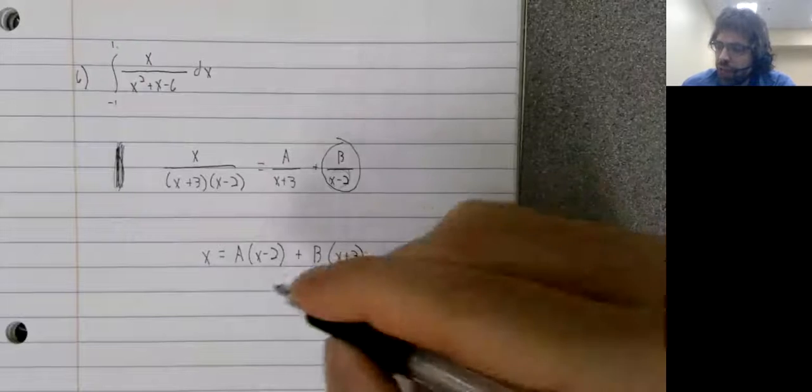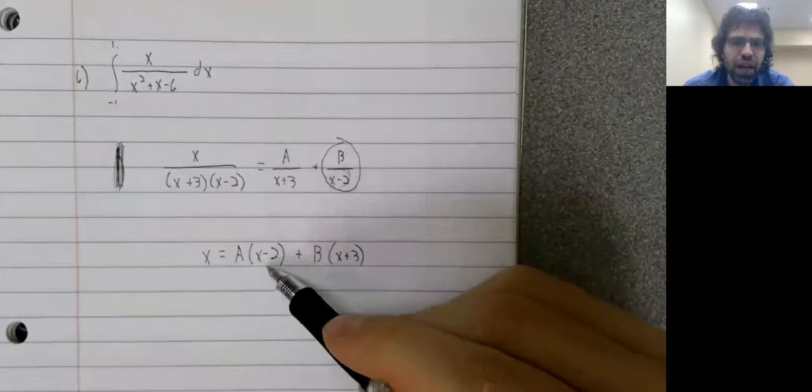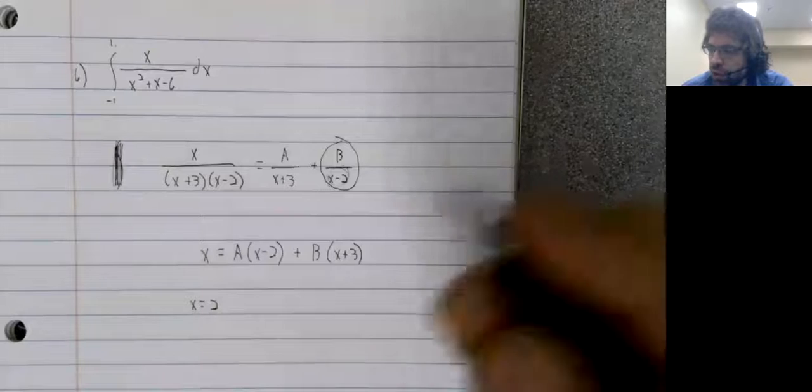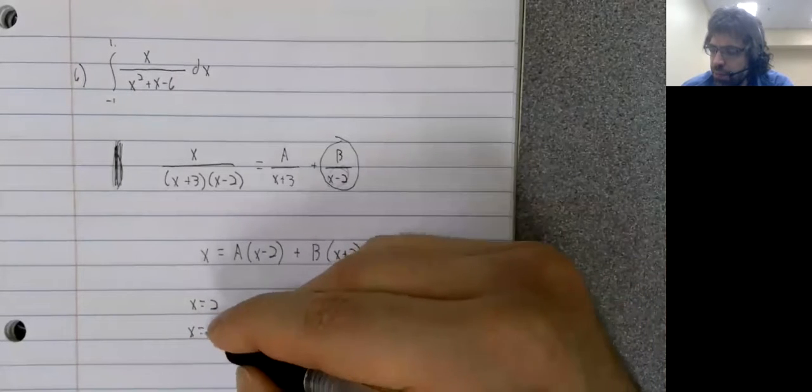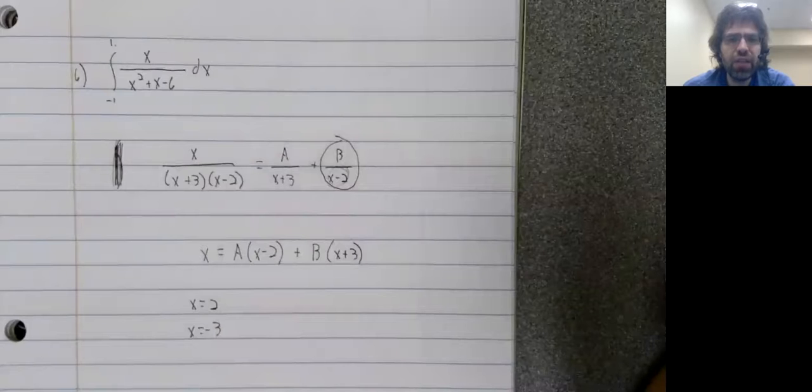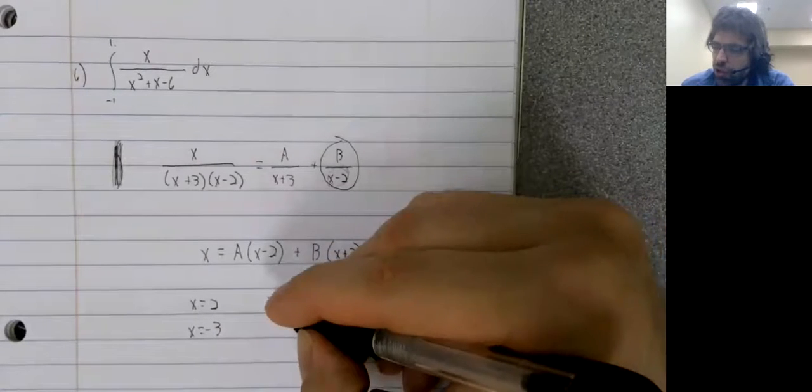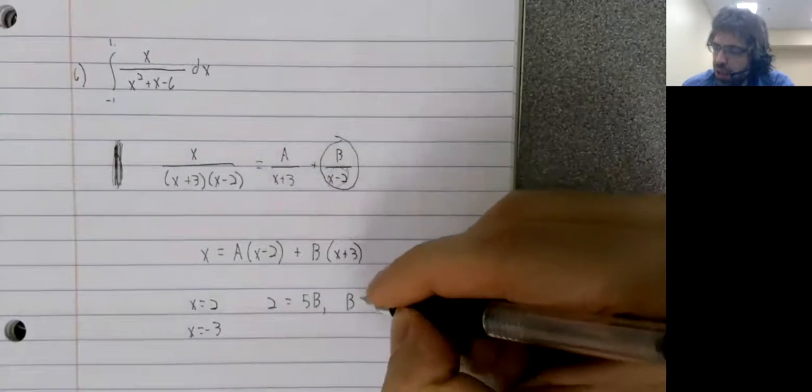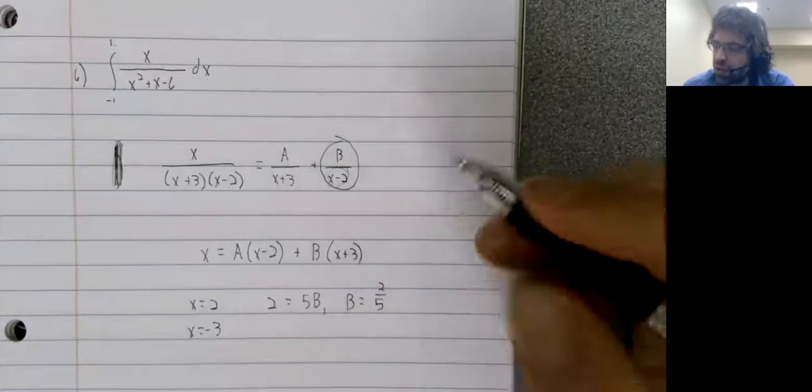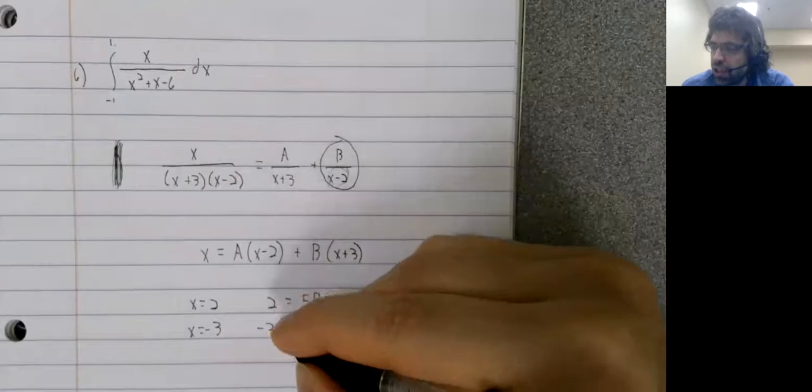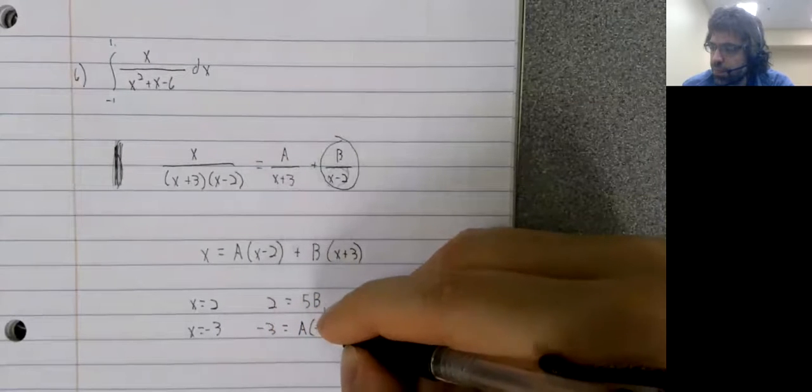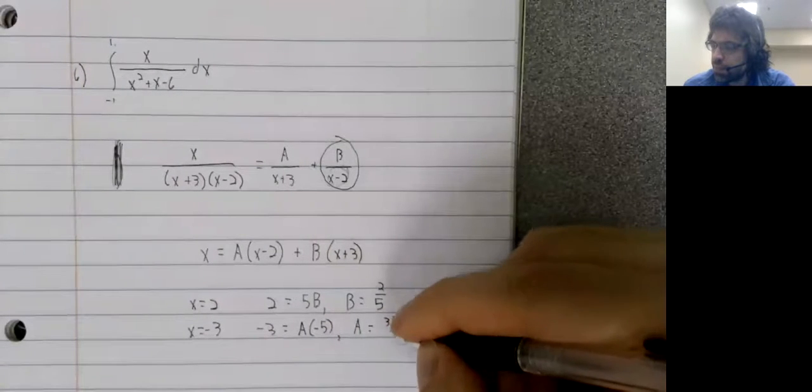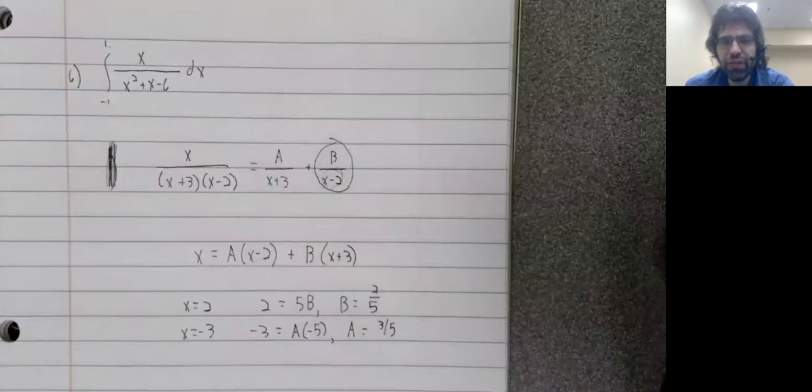And now the Heaviside method is to pick the values of x that make these terms zero. To pick x equals two, and x equals negative three. And when x equals two, we get B equals two fifths. And when x is negative three, we get A equals three fifths.